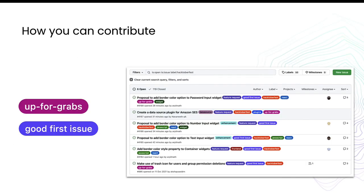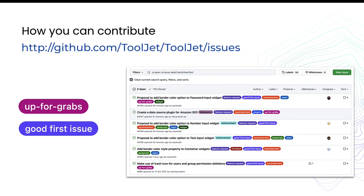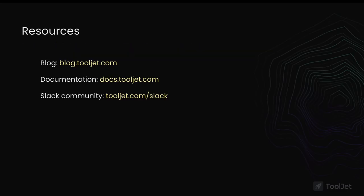You can also contribute to ToolJet by visiting github.com/tooljet/tooljet/issues. Look for 'good first issues' or other tags to start contributing to this open source project. All the use cases shown previously are available as tutorials on the ToolJet blog at blog.tooljet.com, where you can learn to build them from scratch.